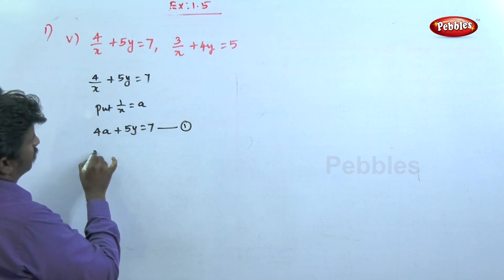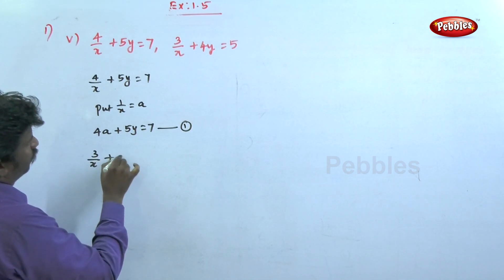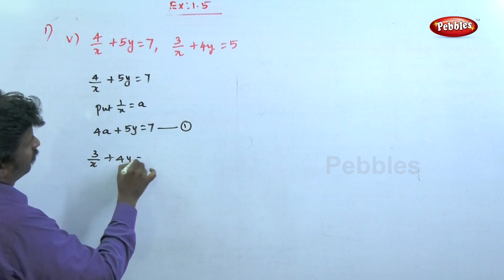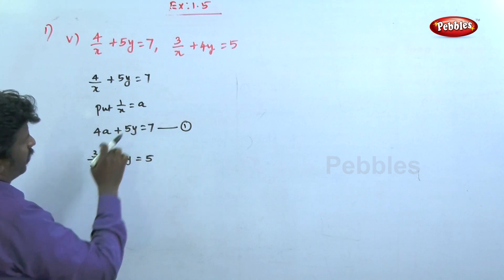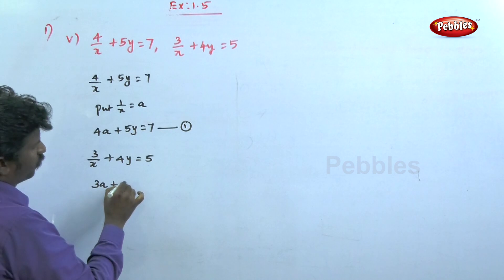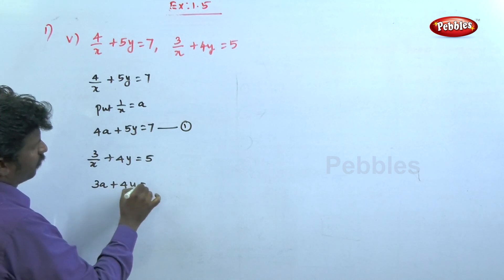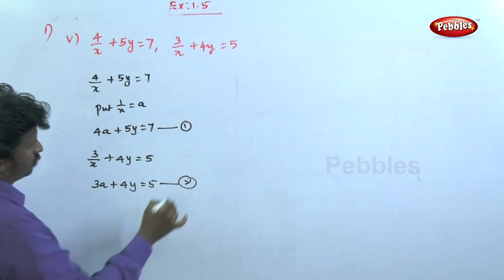Now the second equation: 3 by x plus 4y is equal to 5. Since 1 by x is equal to a, this becomes 3a plus 4y is equal to 5. This is equation 2.